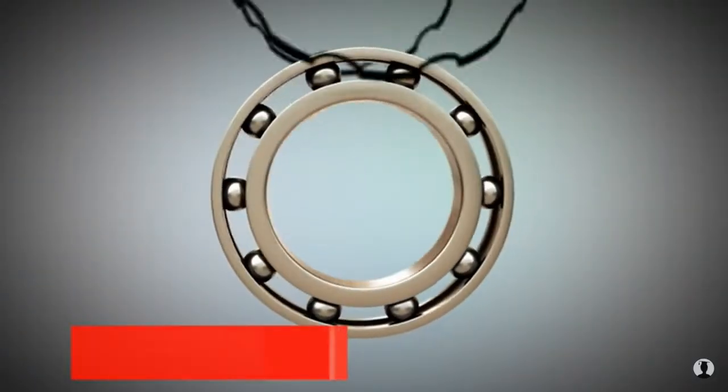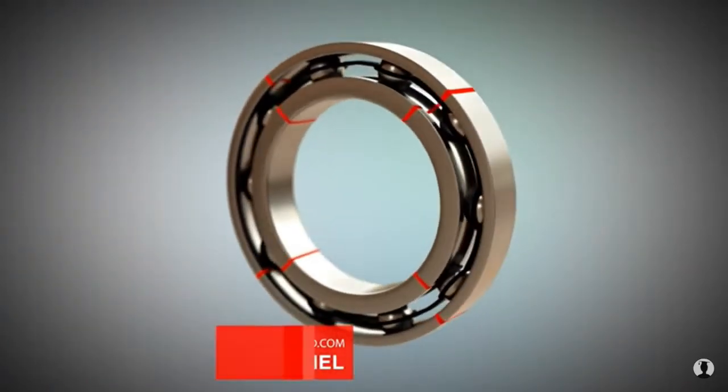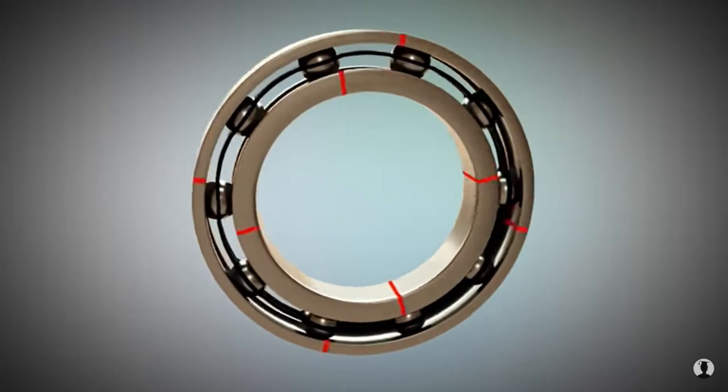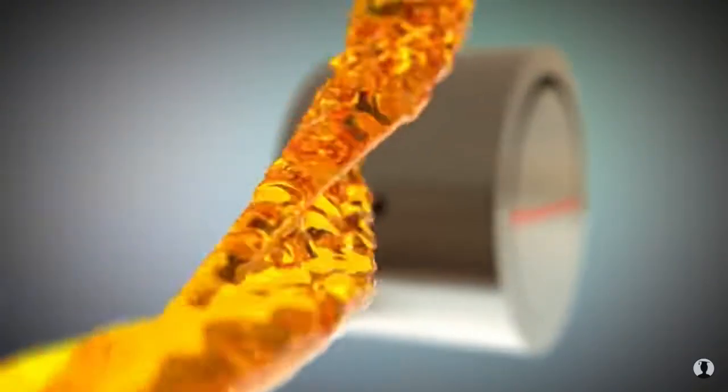Unlike roller bearings, which use roller elements to move the inner and outer ring against each other, plain bearings use oil to form a lubricating film. The lubricating film is created by the two contact surfaces that move.